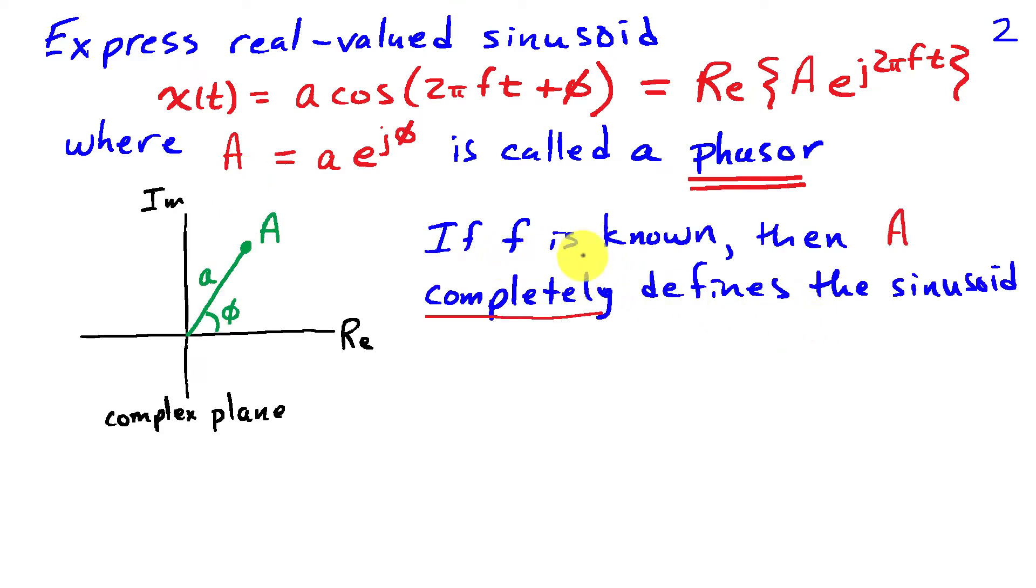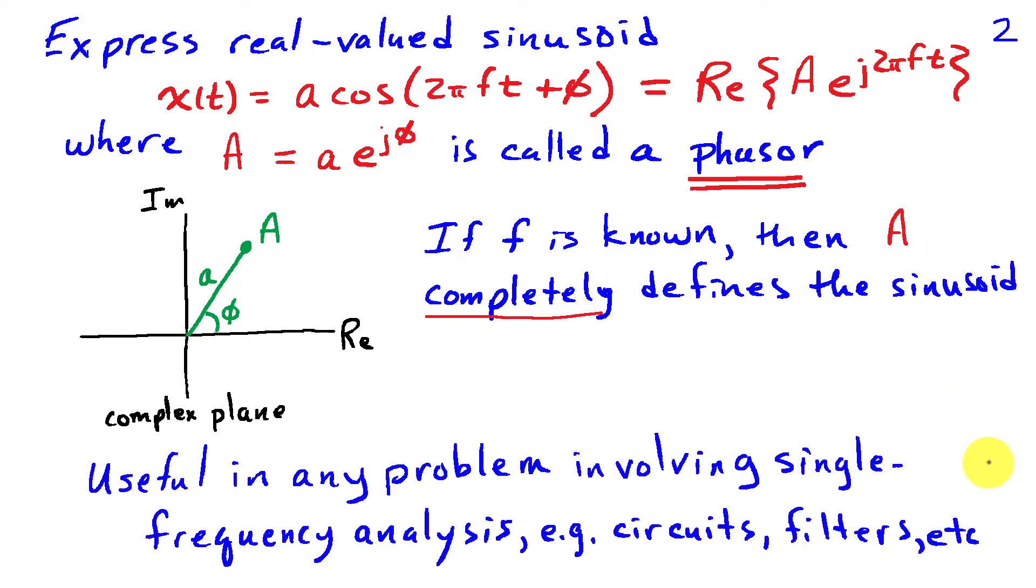If the frequency of the sinusoid is known, then the phasor A completely describes and defines the sinusoid. This phasor represents a point in the complex plane at distance from the origin lowercase a and angle with respect to the positive real axis of phi. Now, this phasor representation for a sinusoid is useful in any problem that involves single frequency analysis, such as commonly occurs in the analysis of electrical circuits or filters in signal processing.